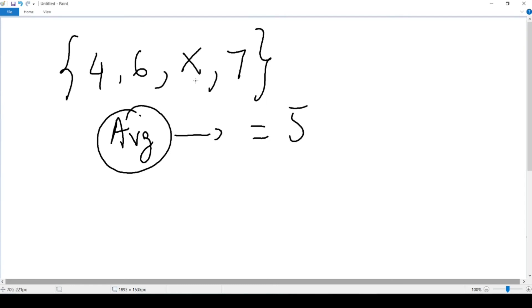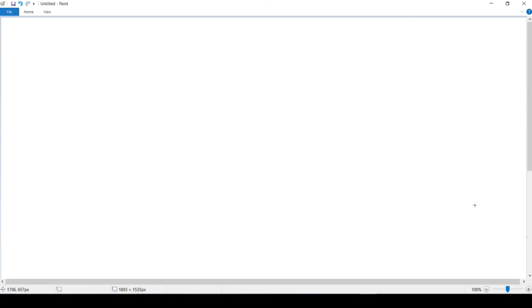So if we remember what we said previously, we add everything from our set: 4 plus 6 plus X plus 7, and we divide it by 1 number, 2nd number, 3rd number, 4th number—so divided by 4—and that should give us 5. Let me rewrite it here: (4 + 6 + X + 7) divided by 4 equals 5.